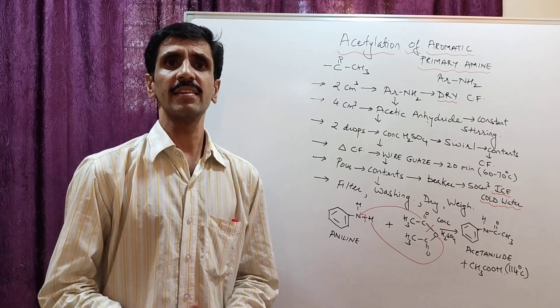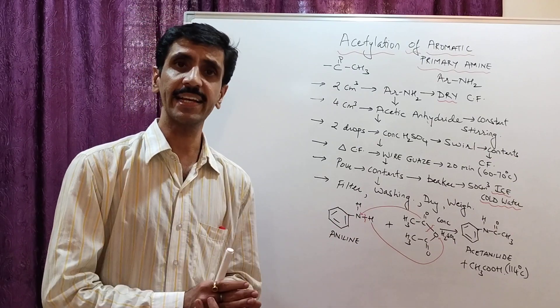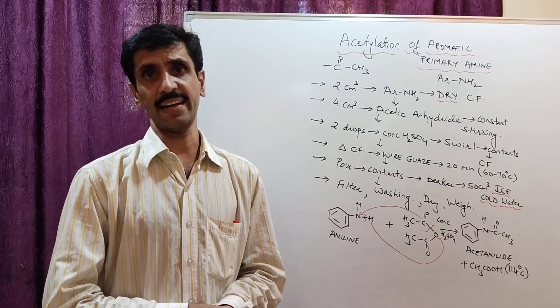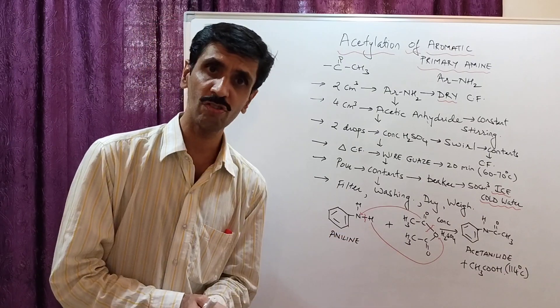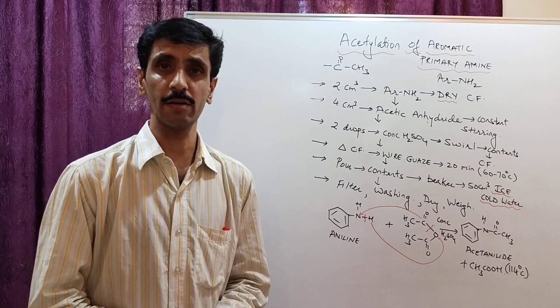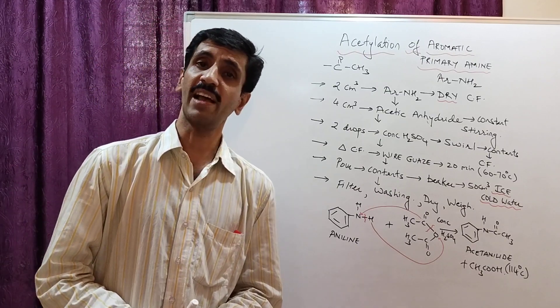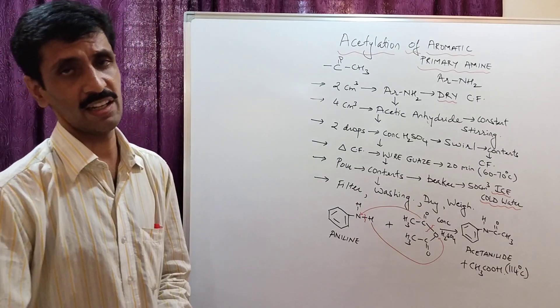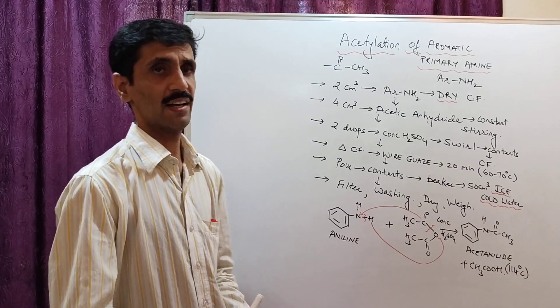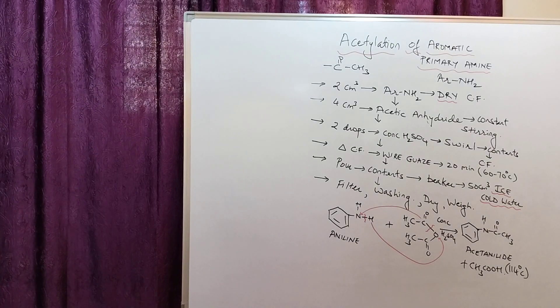My dear friends, so this is the simplest way of synthesis of an organic compound which is acetanilide. I'll just give you a recap once again. We are here discussing about the acetylation of aromatic primary amine. And the best example we can give you is aniline. So the steps involved in this are in front of you. Just check it out. First step, 2 cm³ of aniline. It's a liquid. We need to take it in a dry conical flask.